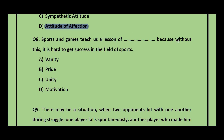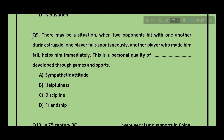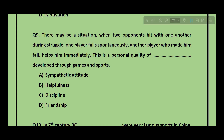Question number 8: Sports and games teach us a lesson of __ because without this it is hard to get success in the field of sports — vanity, pride, unity, or motivation? The answer is unity. Question number 9: There may be a situation when two opponents collide during a struggle; one player falls and the other player who made him fall helps him immediately. This is a personal quality developed through games and sports. The answer is helpfulness.